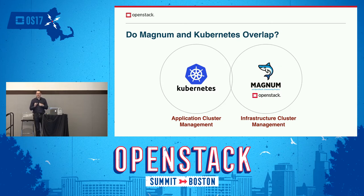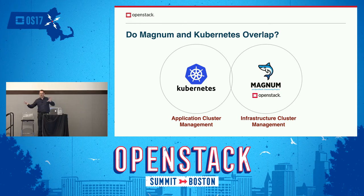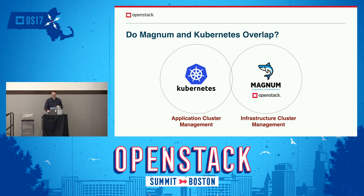People often ask what's the overlap between Kubernetes and Magnum. We are not in the business of running containers at all — we're in the business of starting up the container cluster and handing over the native API. The native client and native API is what you use to run container workloads. We manage the infrastructure, not the application cluster. There's no single scheduler handling both infrastructure and application management — they're handled independently. Magnum is your instrument for programmable management of the infrastructure layer.